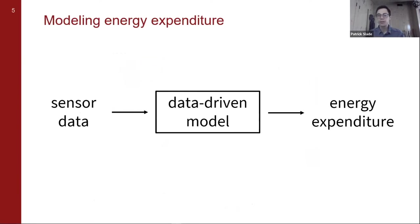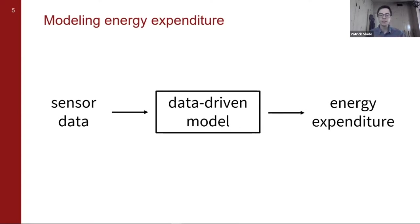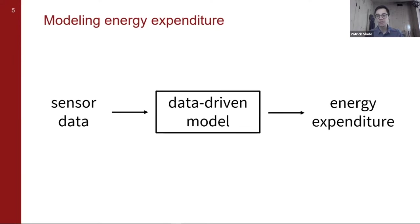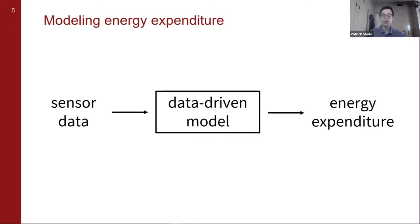As we talk about our approach for estimating energy expenditure, we'll mostly focus on this data-driven model, which is the core of our device. At a very high level, we take in wearable sensor data and pass it to a data-driven model which estimates energy expenditure. Here we'll be talking about linear regression models — we're going to learn a relationship between movement from sensor data to estimate energy expenditure. One challenge of these linear regression models is they can only take a fixed size of input data, so we need to figure out how to get a fixed-size input that captures what we need to know about how muscles are burning energy.